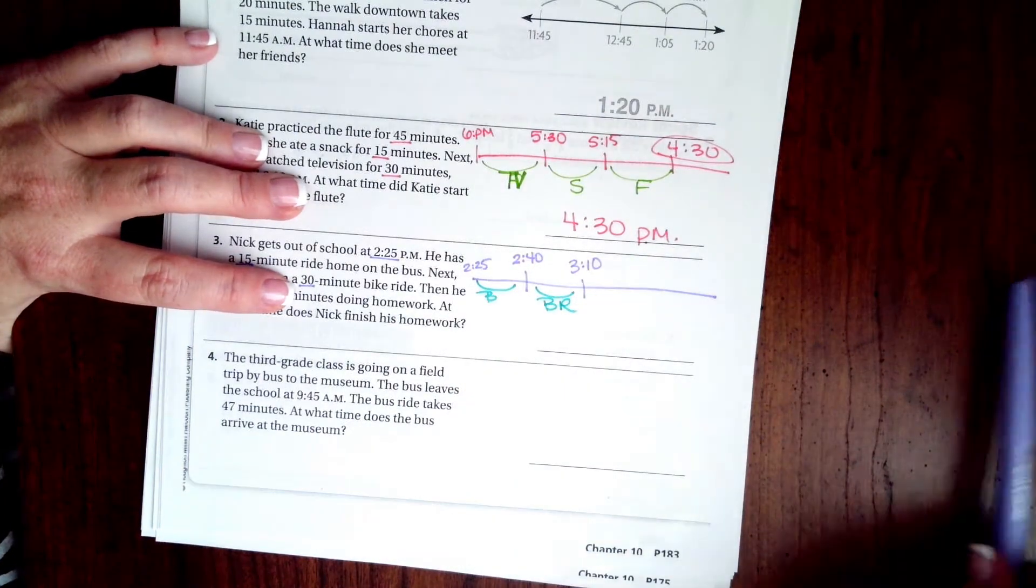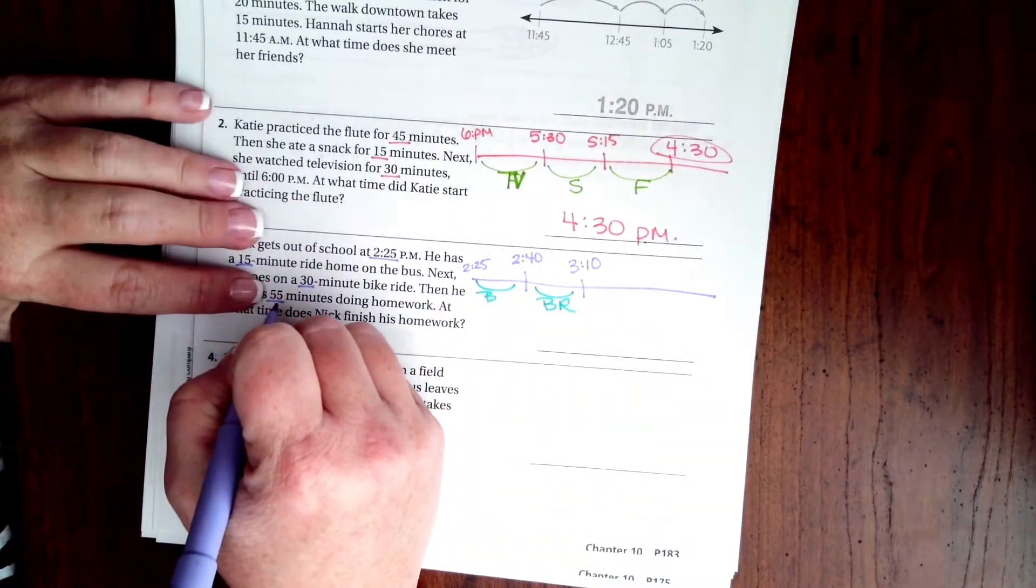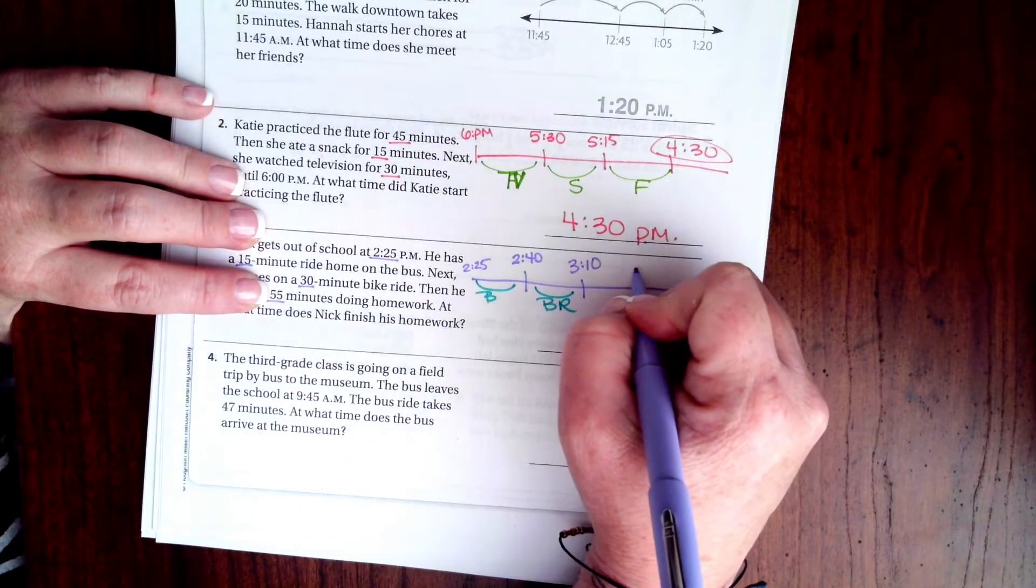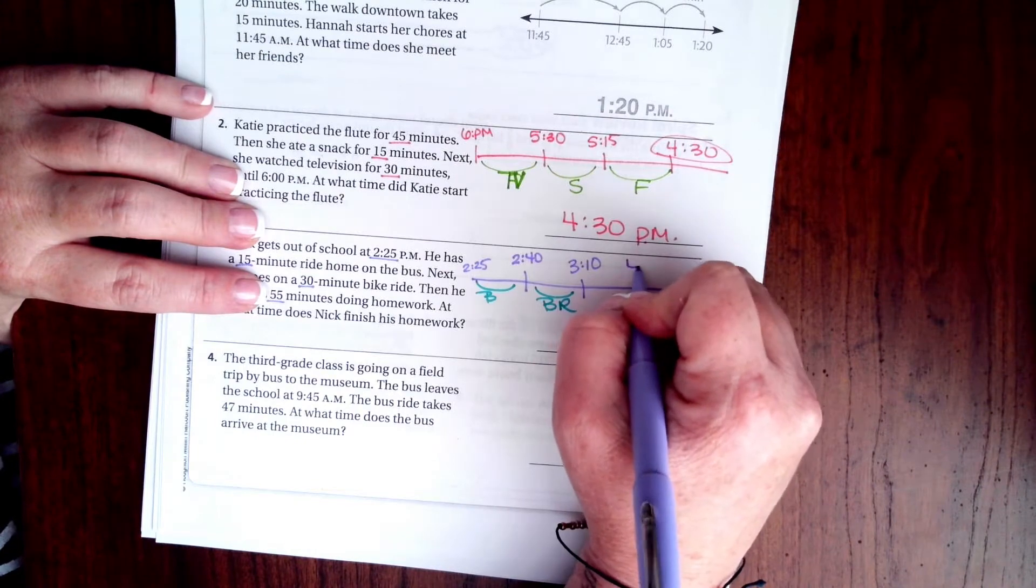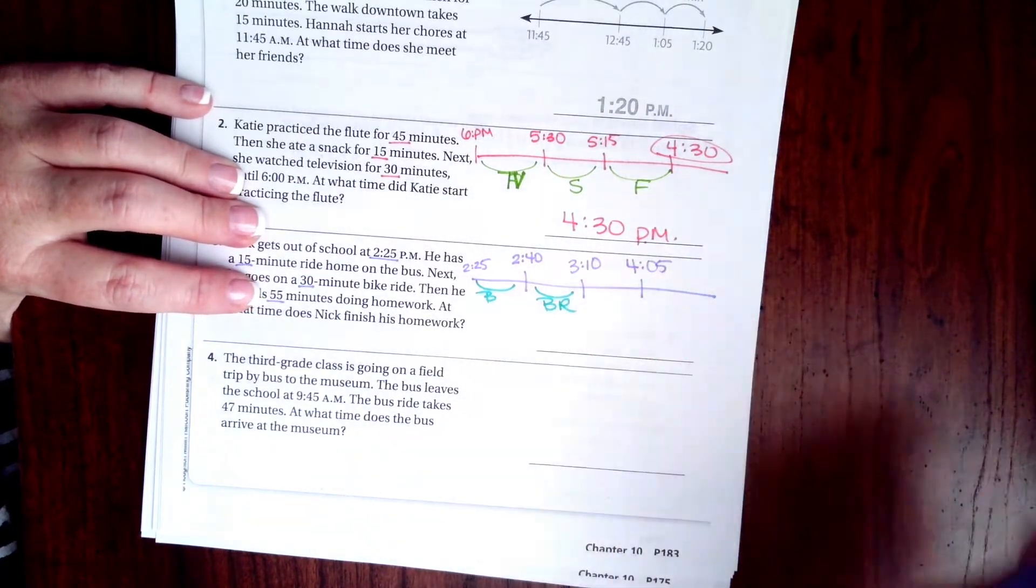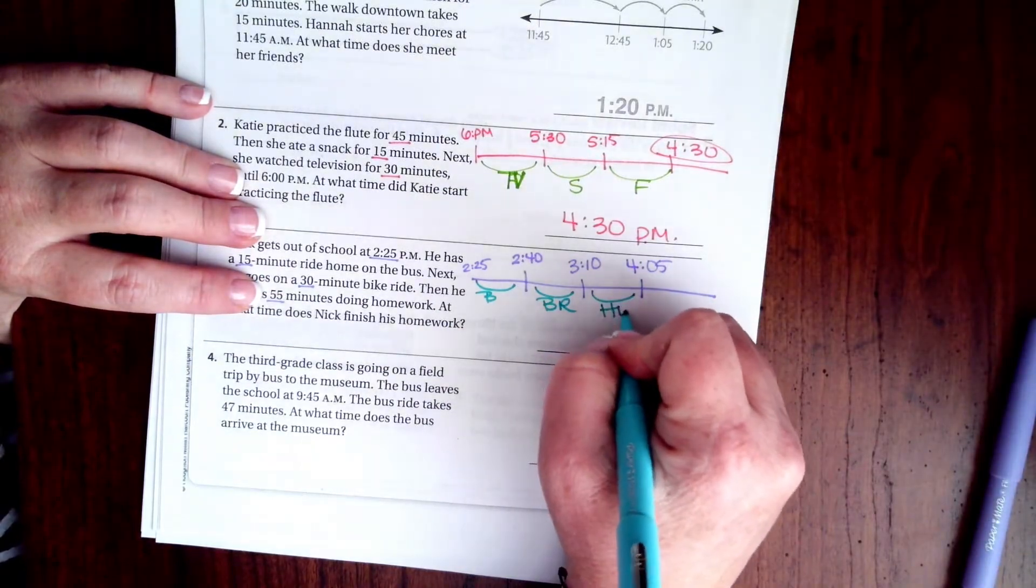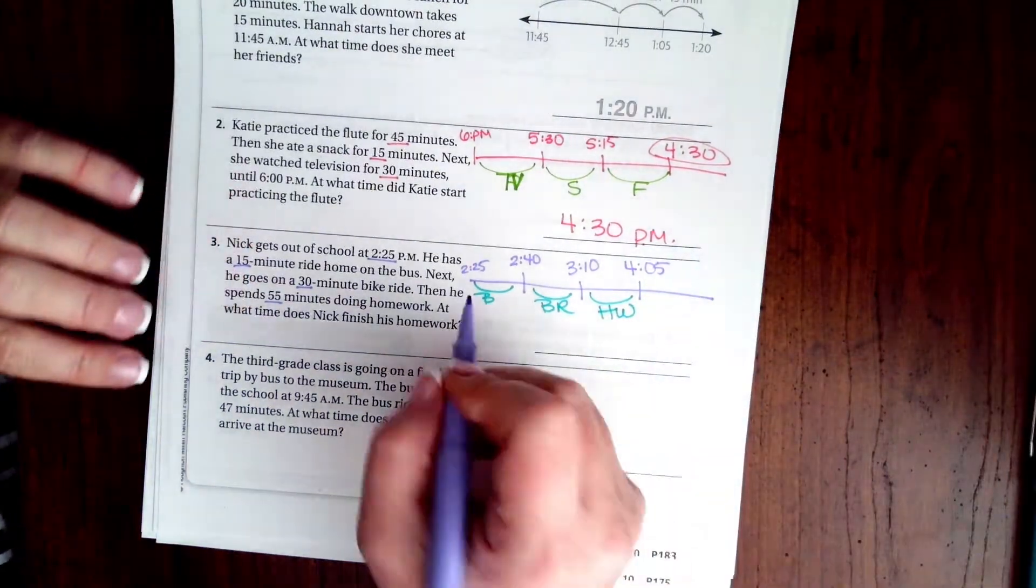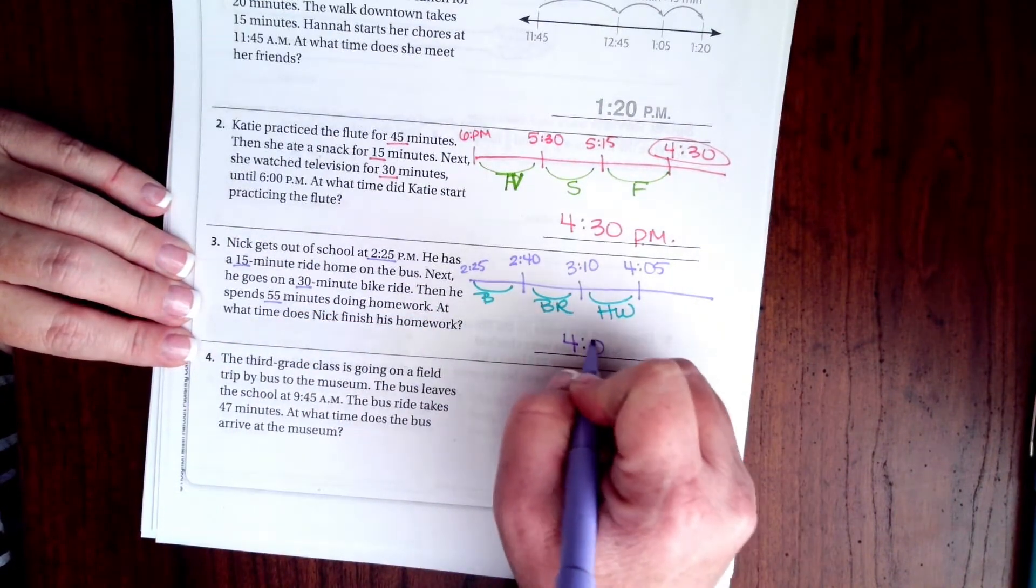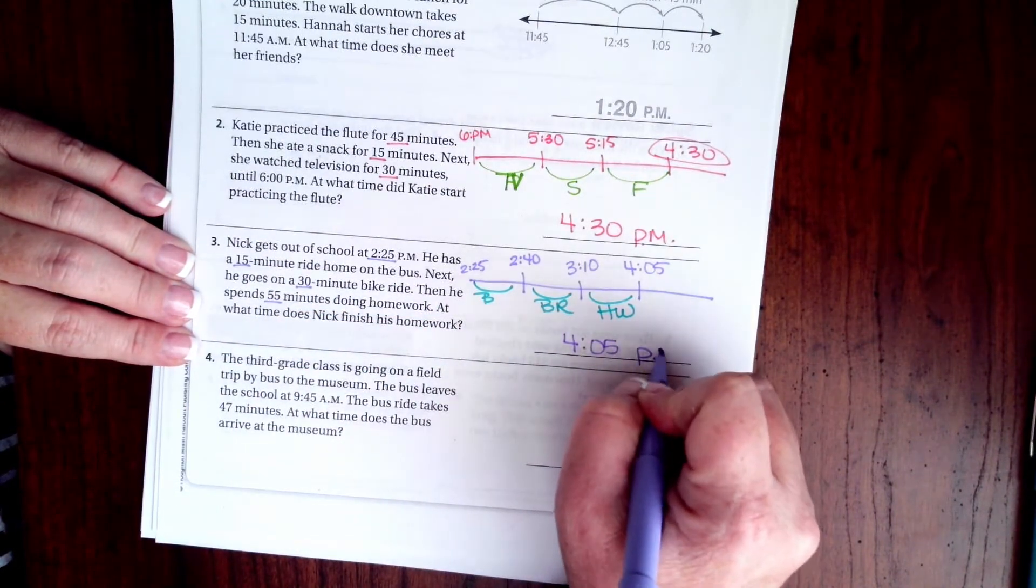Now 55 minutes. Well, 50 minutes gets us to 4 o'clock, so 55 would be 4:05. This is his homework time. We have all our times accounted for and we stopped at 4:05 PM.